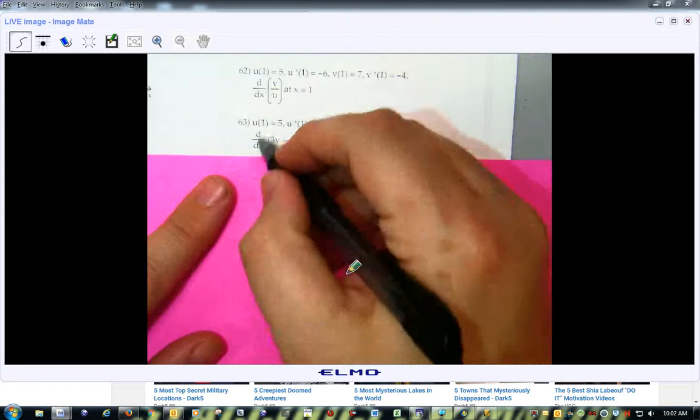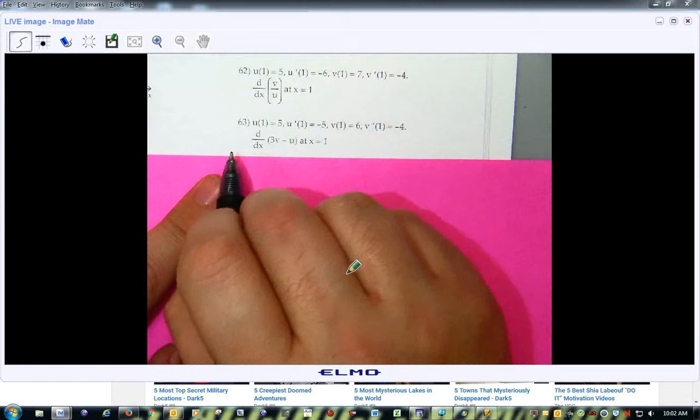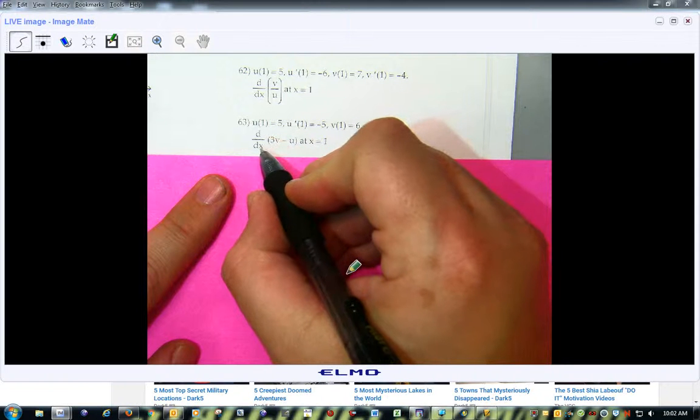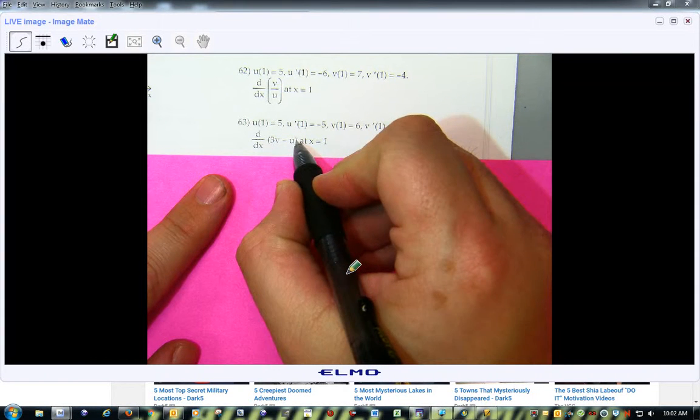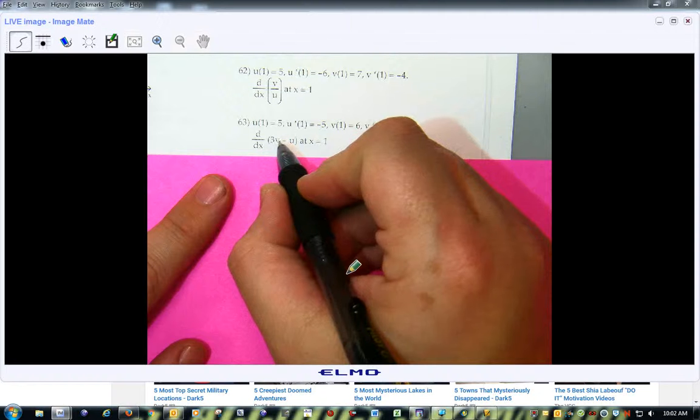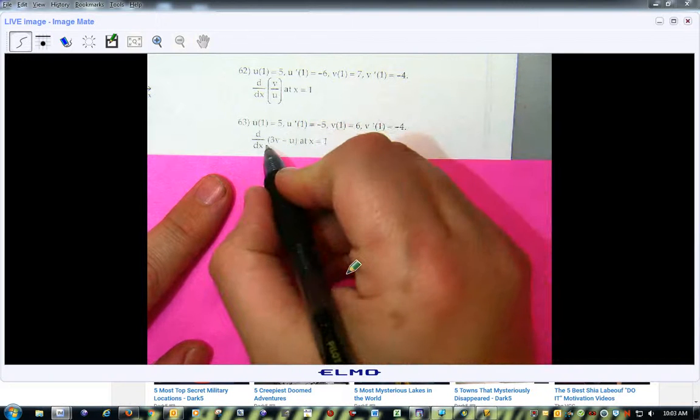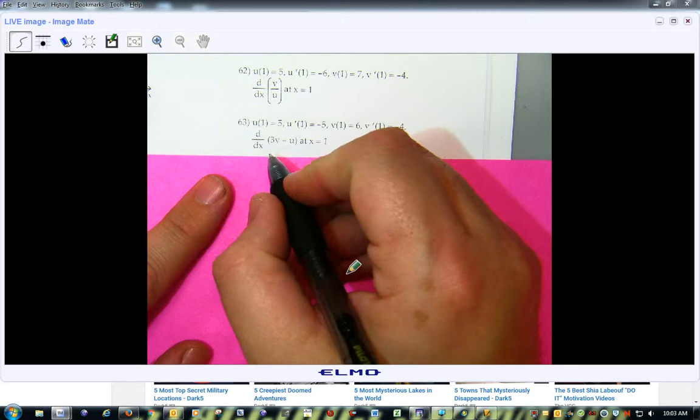Alright, for this guy, since the key to this is, since we were taking it with respect to x, and these aren't x, if it was with respect to v, that'd be great, if it was with respect to u, that'd be great. But since it's with respect to x,